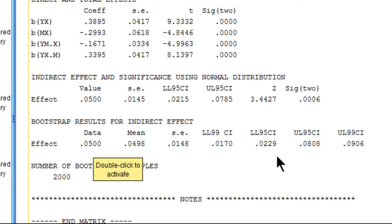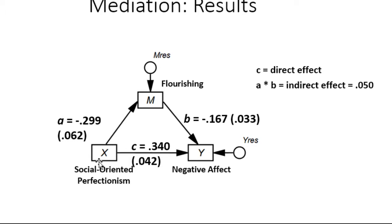In summary, there is a statistically significant indirect effect of socially oriented perfectionism on negative affect equal to 0.050, running through flourishing. But there is also a statistically significant direct effect from socially oriented perfectionism to negative affect. Because both the direct effect and the indirect effect are statistically significant, I conclude this is a case of partial mediation, which is in contrast to the previous example that was consistent with full mediation.